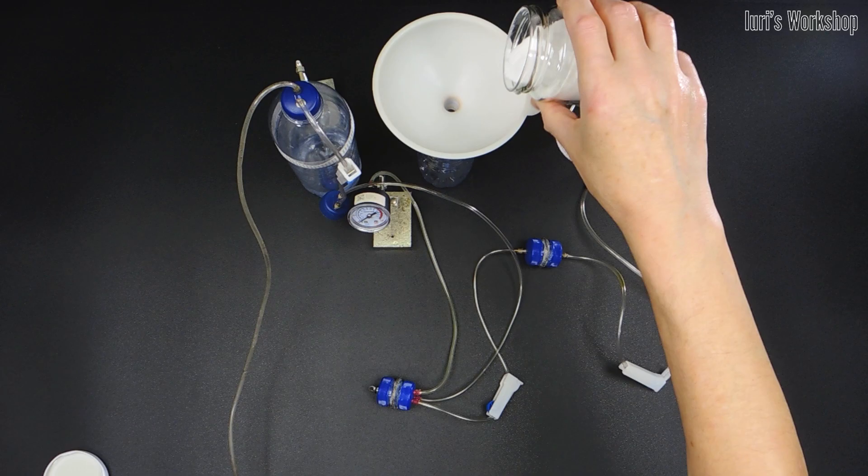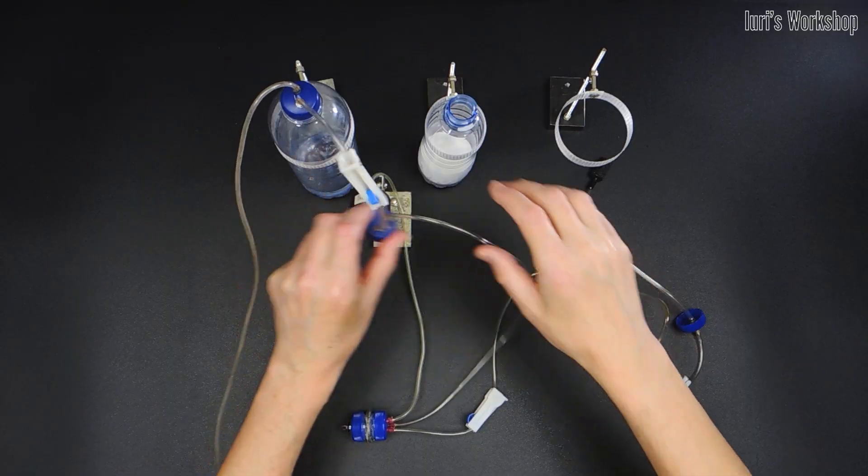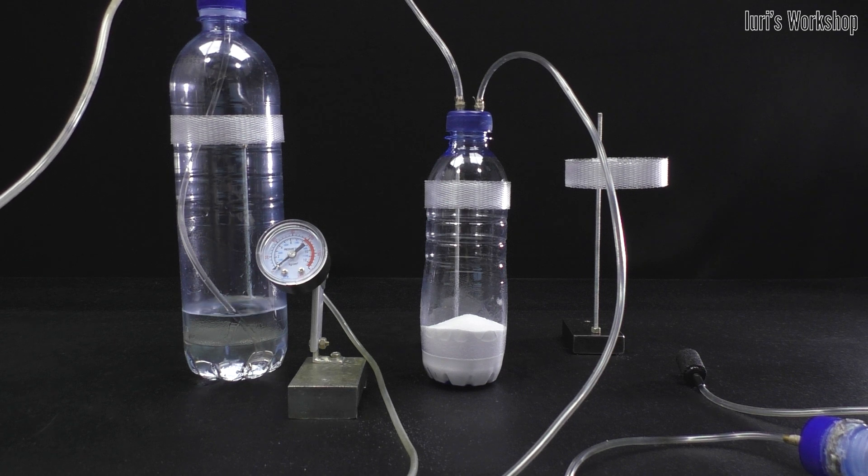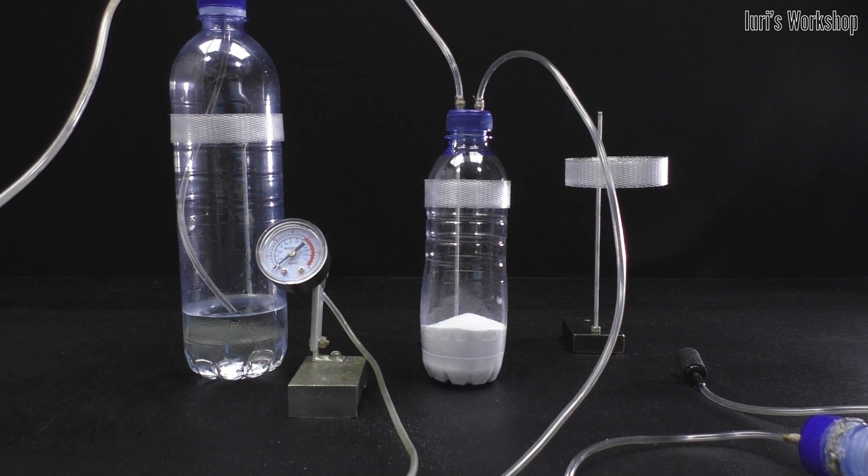In tank number 2, we put sodium bicarbonate, which is common baking soda. Then we increase the air pressure in the acetic acid tank to 5-6 atmospheres.